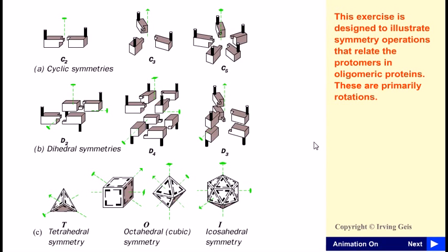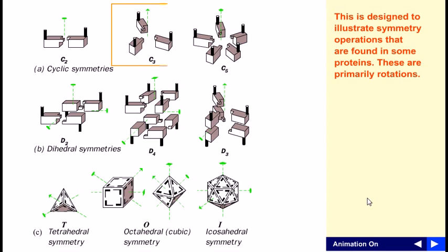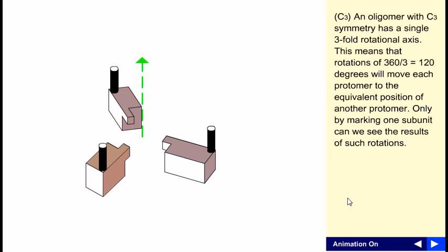Okay friends, now let us talk about the symmetry and operations of different proteins and how the protein molecules are arranged to maintain symmetry. If we take the symmetry of C3, which is an oligomer with C3 symmetry, it has a single threefold rotational axis that you can see here in green color. This means that rotation of 360 degrees is carried out by 120 degrees, which will move each protomer to the equivalent position with another protomer.